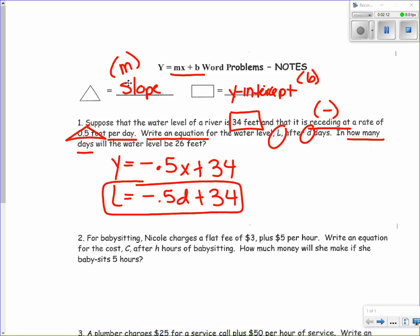The second part asks, in how many days will the water level be 26 feet? Water level is 26, so that's our L. I'm going to plug 26 in where L is. The rest remains the same: negative 0.5D plus 34. Now we're going to solve this equation like we did several weeks ago. Subtract 34 from both sides.